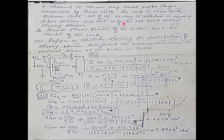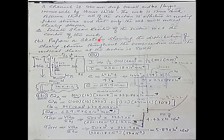We assume that all of the section is effective in resisting fiber stresses, and that only the web resists the vertical shearing stresses. For Part A, we need to locate the shear center of the section with respect to the center of the web.